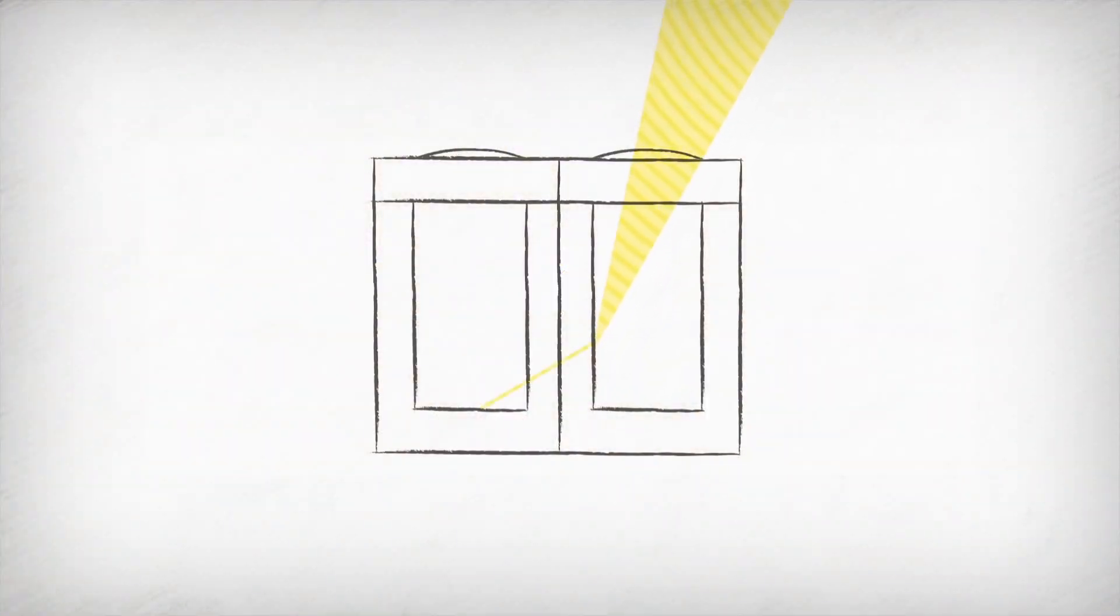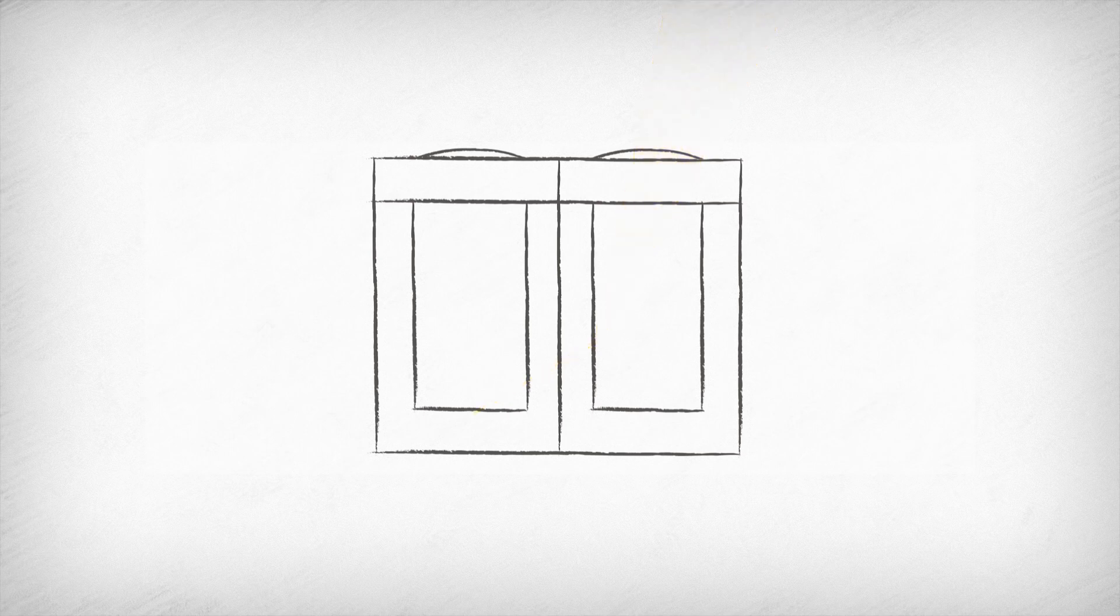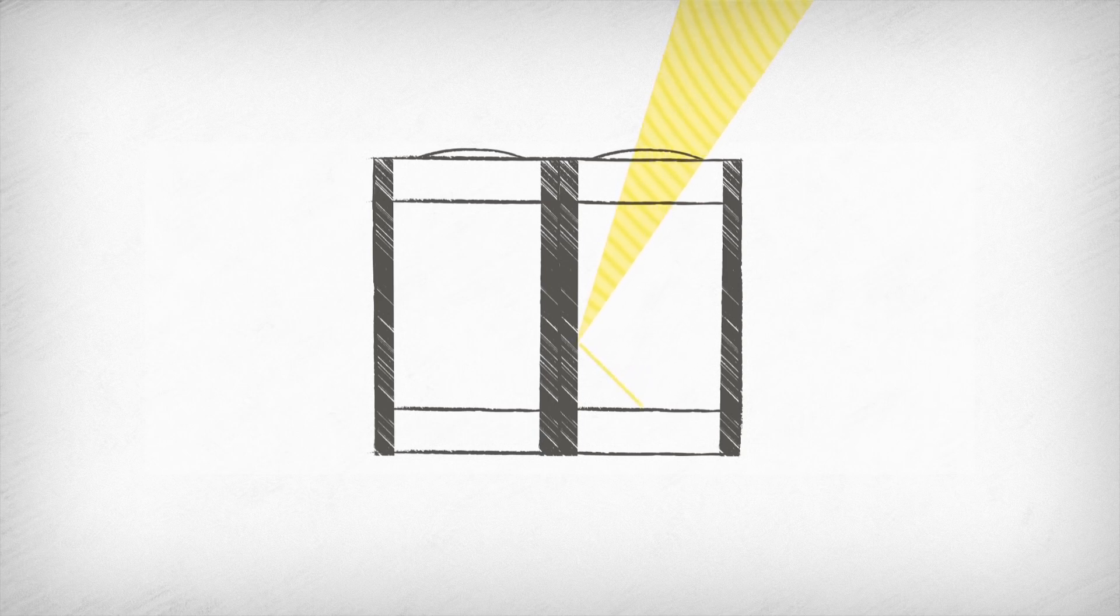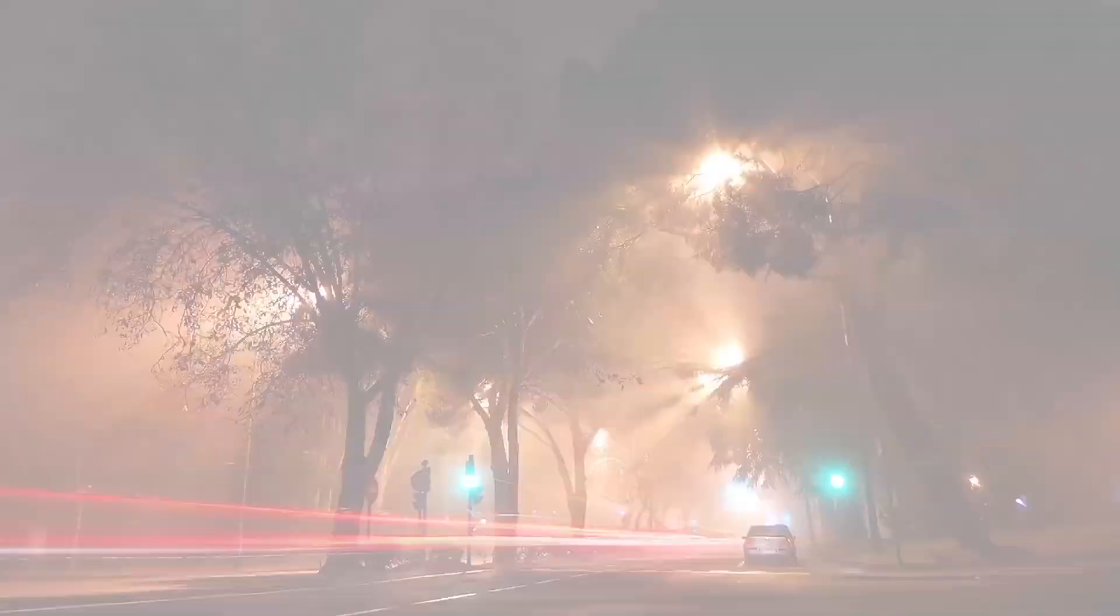ISOCELL pixels decrease crosstalk between neighboring cells by forming minute barriers between neighboring pixels to increase light sensitivity and control electron collection, resulting in higher color fidelity even in poor lighting conditions.